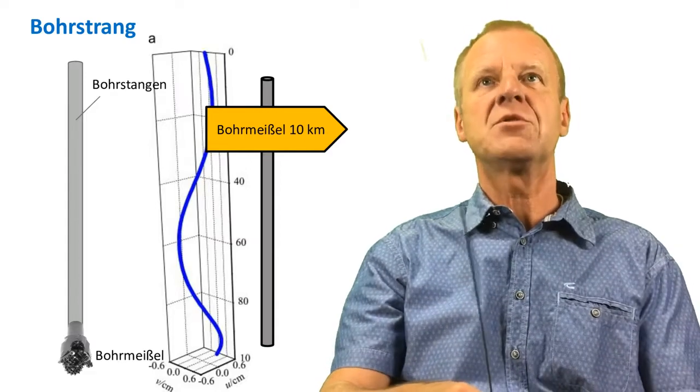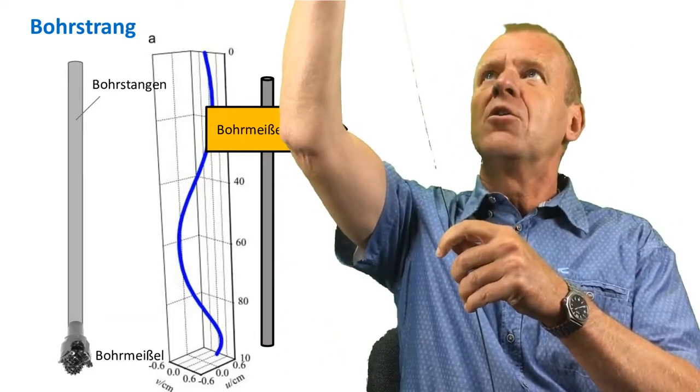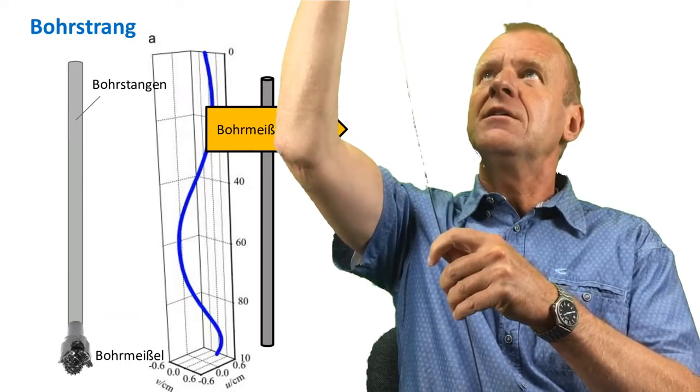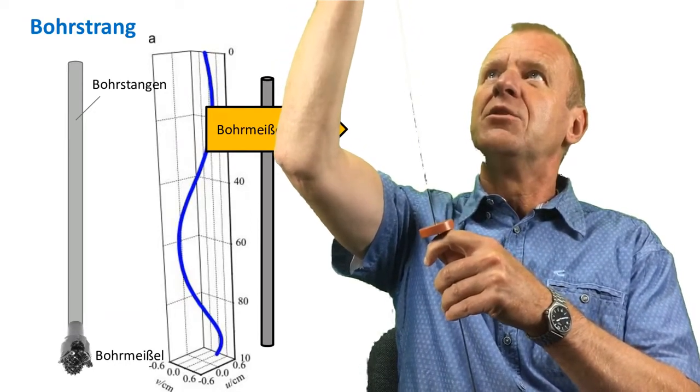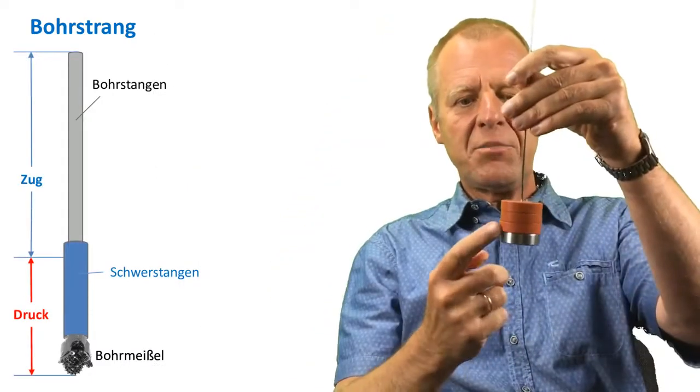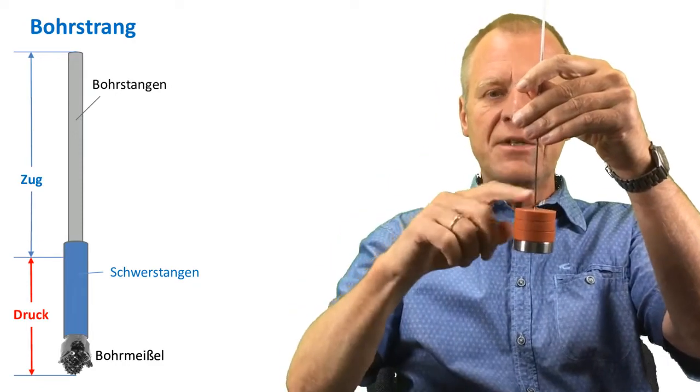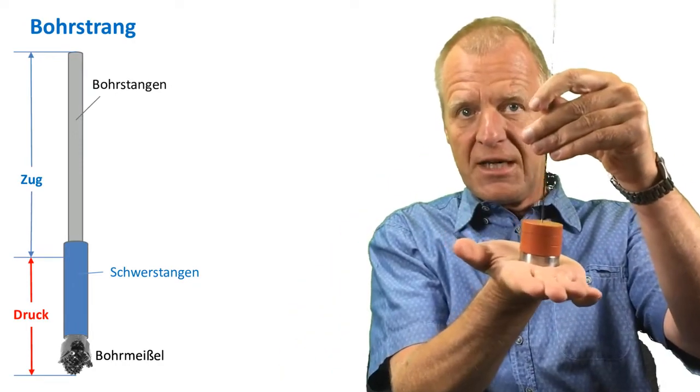Therefore, to fix this problem we make use of some very heavy weights just like you can see here. We place these very heavy weights near the bit. I will call them the drill collars. That's it, you can see it.